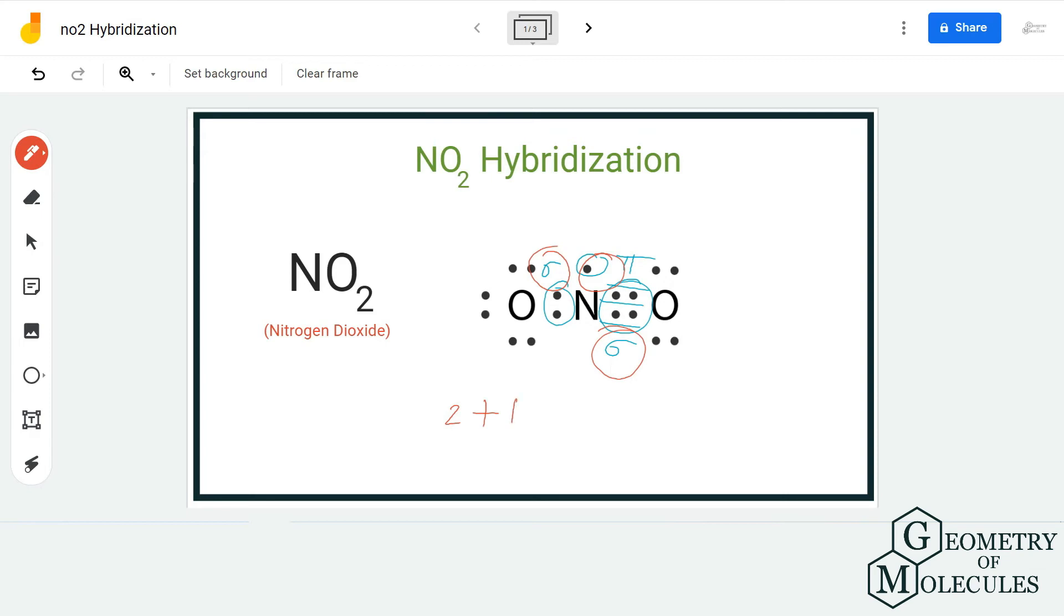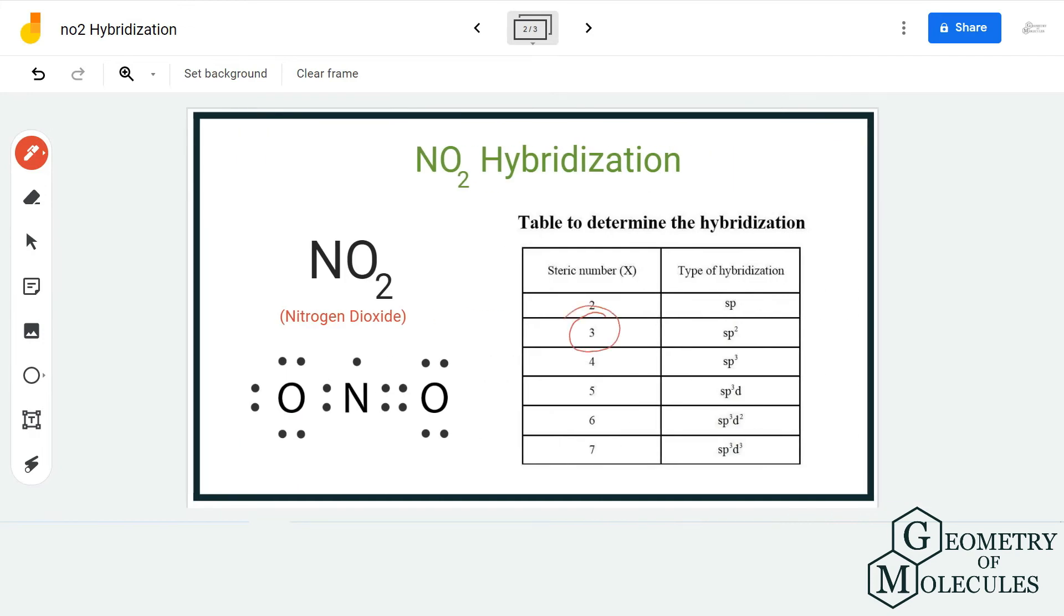Considering that, we have the steric number three. As a result, nitrogen will have three hybrid orbitals to accommodate these two bonding pairs of electrons and this one electron which is not forming any bonds. As it will have three hybrid orbitals and its steric number is three, it corresponds to sp2 hybridization.